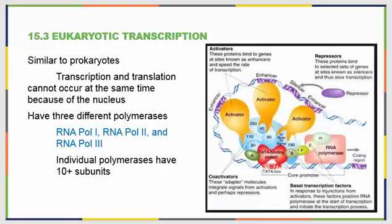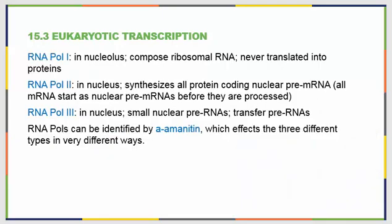The individual polymerases can have 10 or more subunits, so the enzymology gets pretty advanced quickly. The individual polymerases have three different jobs. Pol 1 is found only in the nucleolus and composes ribosomal RNA — it's never translated into a protein. Pol 2 is found in the general nucleus and synthesizes all of the protein-coding nuclear pre-mRNA. Pol 3 is in the nucleus and makes small nuclear pre-mRNAs, many of which become transfer RNAs, but all must go through the pre-stage before being released into the cell.